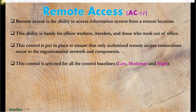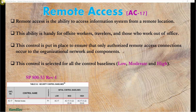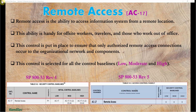This control is selected for all control baselines — low, moderate, and high. In Rev4, AC-17 Remote Access is selected for the low, moderate, and high baselines, with control enhancements for the moderate and high baselines. Likewise, in Rev5, AC-17 is selected for all three baselines.